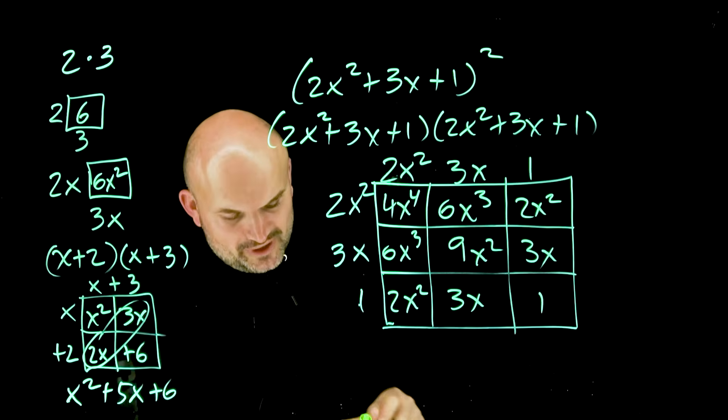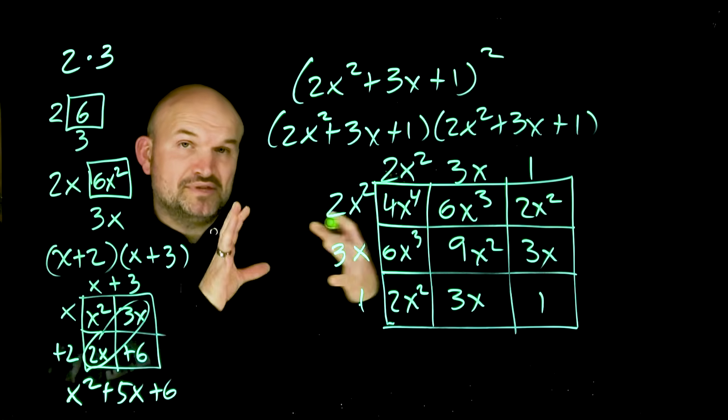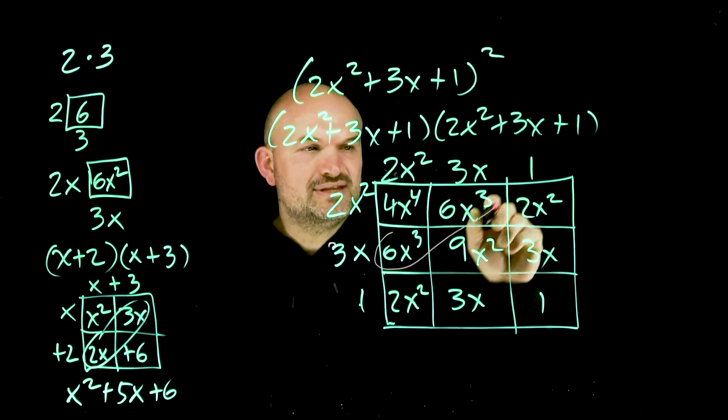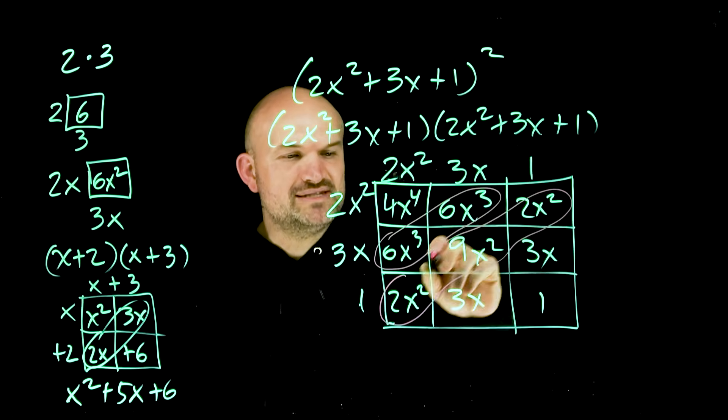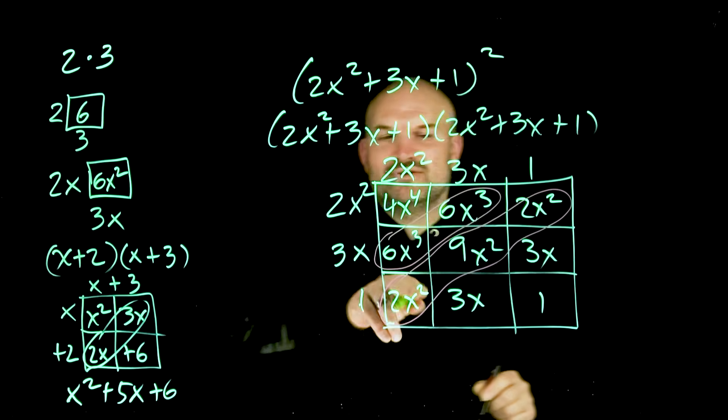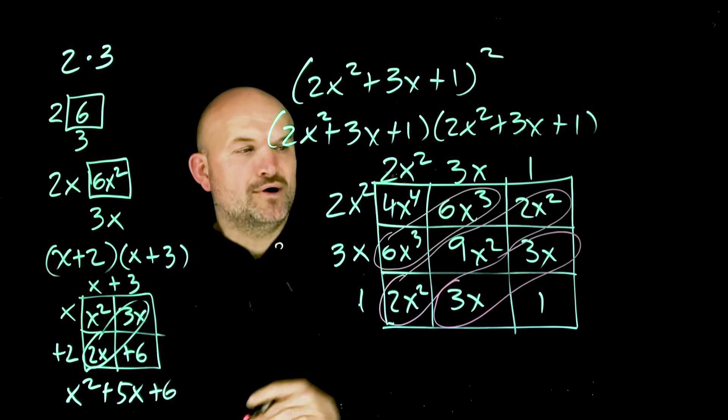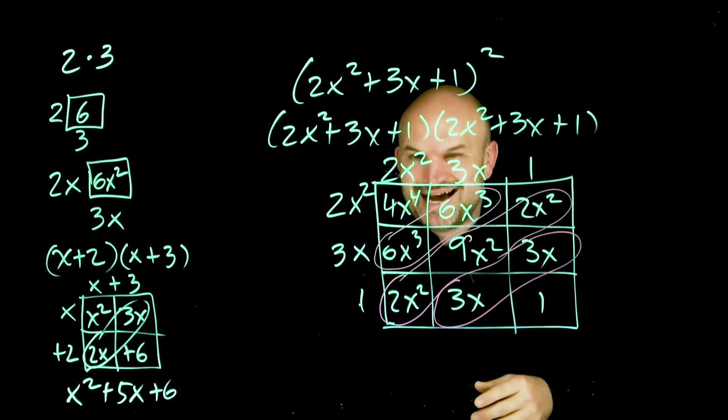Now, the real reason why this becomes a powerful method is because when you have expressions that are both in standard form, you're always going to get like terms on the diagonal. I cannot tell you how many times I've caught a mistake this way. Everything on the diagonal, as long as your two expressions that you're multiplying are in standard form, will always be like terms. So you simply combine your like terms on the diagonal.